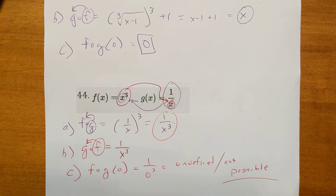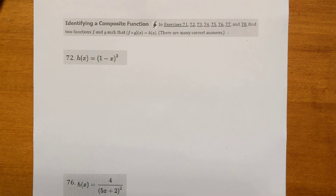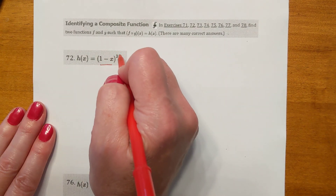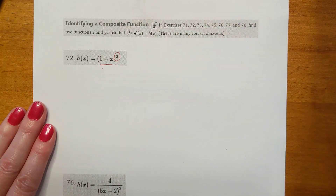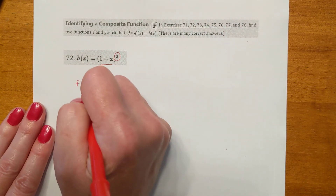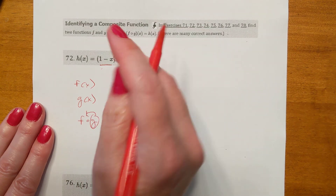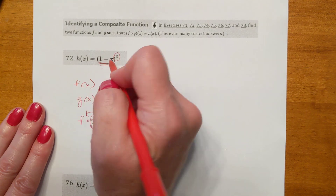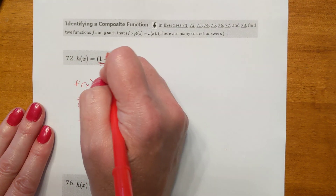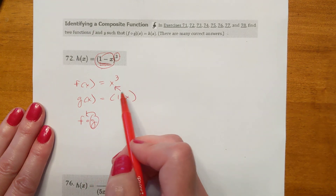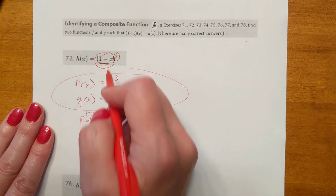Find two functions f and g such that f of g of x equals h of x. We want to decompose the composite function. The parent function here is x to the third, and the piece being plugged in — what's in parentheses — is 1 minus x. So if you pick up 1 minus x and plug it in for x, you get (1 minus x) to the third. So f(x) equals x cubed and g(x) equals 1 minus x.